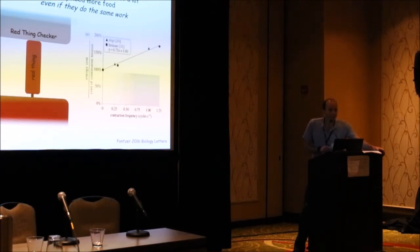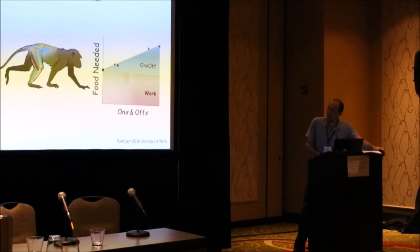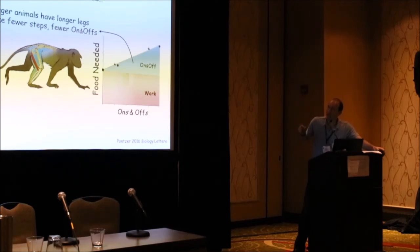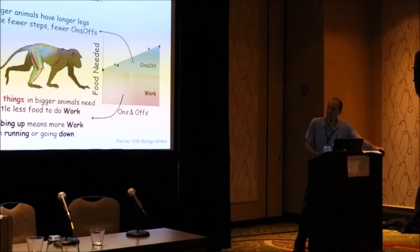So the food that the red things inside that move us need when we walk and run and climb, the food is to do the work and also for turning on and off. Now, in animals, bigger animals have longer legs, take fewer steps, and so have fewer on and offs. The red things in bigger animals need a little less food to do work, and climbing up means more work than running or going down.